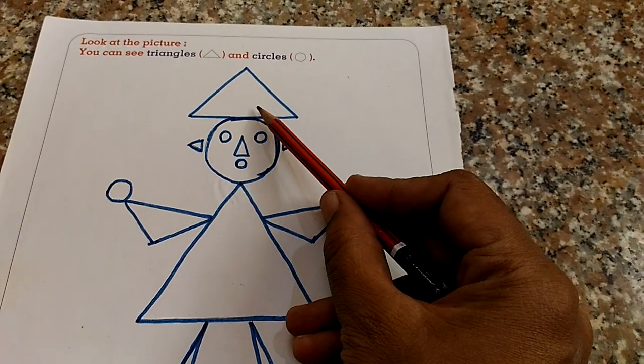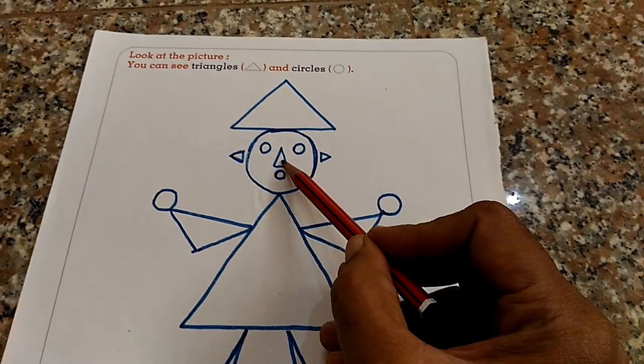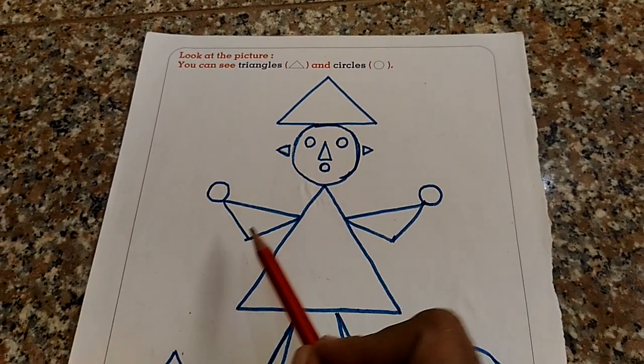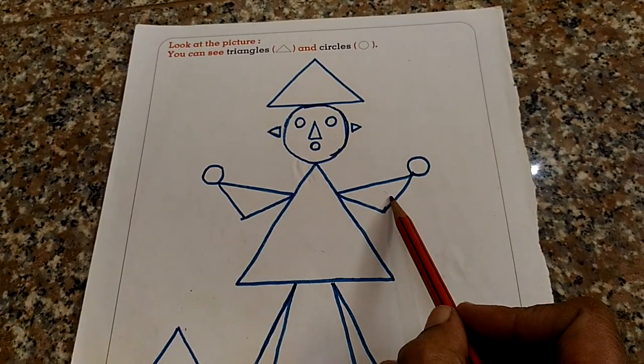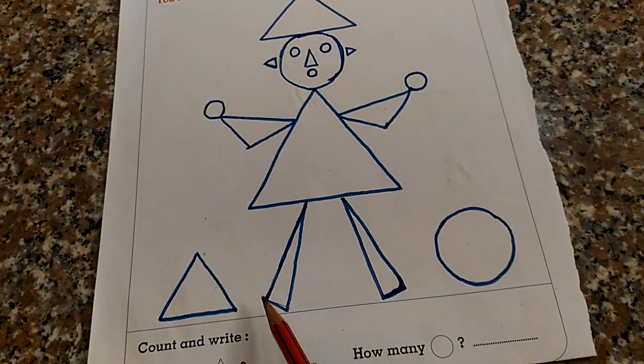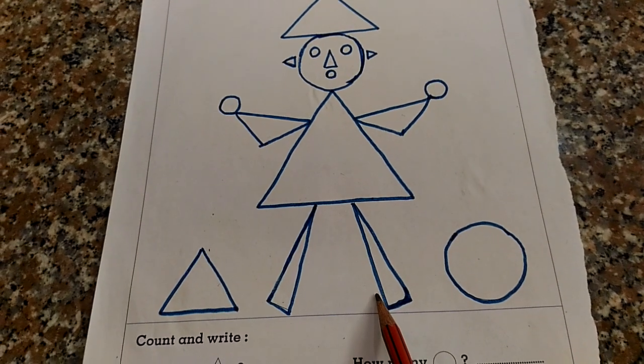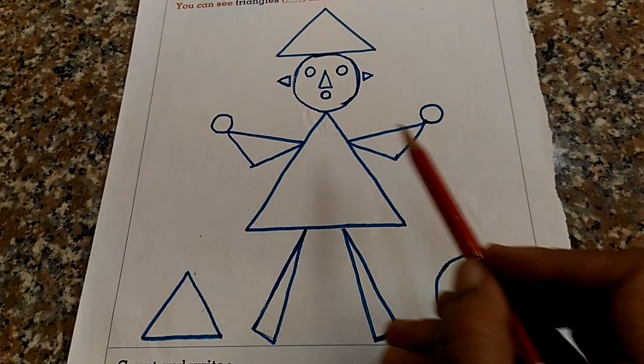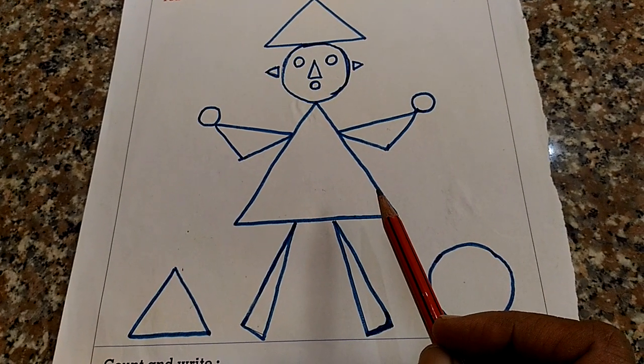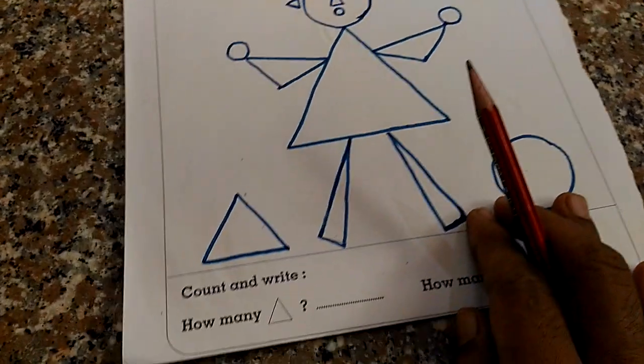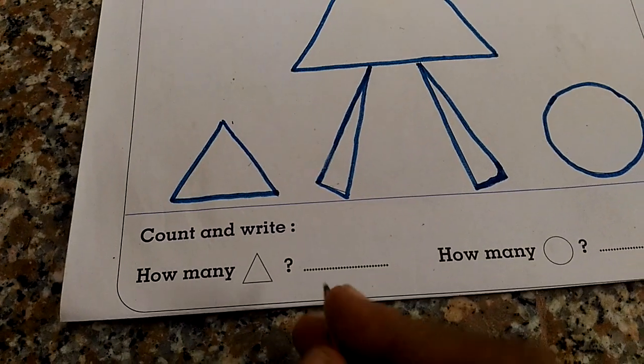1, 2, 3, 4, 5, 6, 7, 8, 9. How many triangles here? 9 triangles. How many triangles here? 9 triangles.